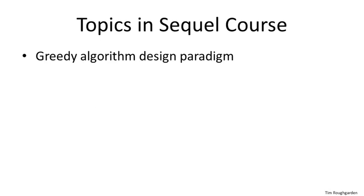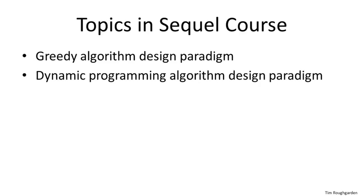There are a number of important concepts we won't have time to cover in this five-week course. Some will be covered in the sequel course, Design and Analysis of Algorithms 2, which corresponds to the second half of Stanford's ten-week course. The first part of that sequel focuses on two more algorithm design paradigms: the design and analysis of greedy algorithms, with applications to minimum spanning trees, scheduling, and information theoretic coding; and the design and analysis of dynamic programming algorithms, with applications in genome sequence alignment and shortest path protocols in communication networks.